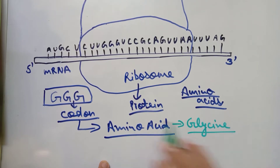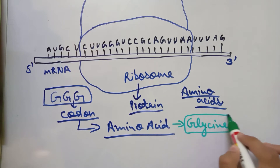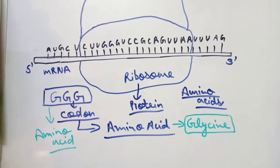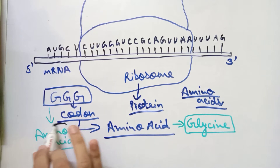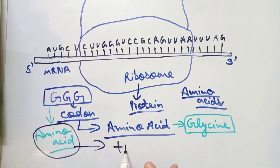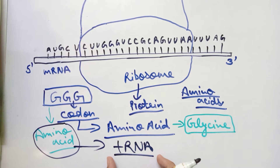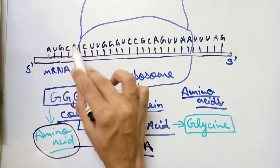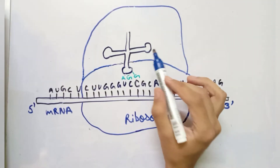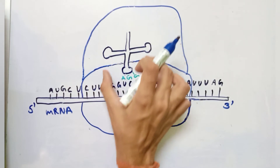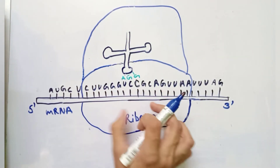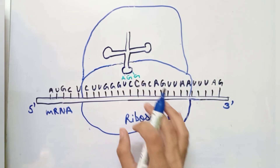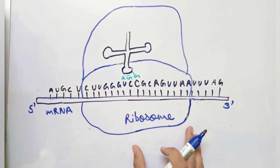This specific codon will code for glycine, and the codon will be converted into an amino acid with the help of tRNA. As discussed earlier, tRNA is formed during transcription with the help of RNA polymerase. The tRNA molecule helps in translation by converting different codons into amino acids. It comes to the ribosome, reads the mRNA, and starts coding the protein.